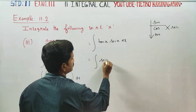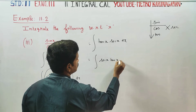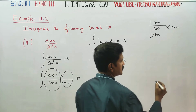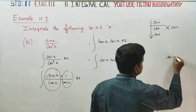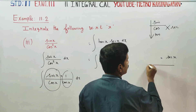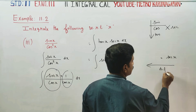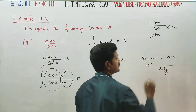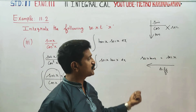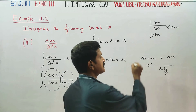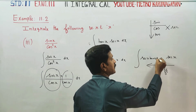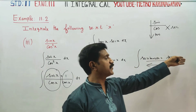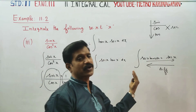The integrand is secant x tan x dx. If you differentiate secant x, you get secant x tan x. So integrating secant x tan x, you will be getting secant x. Integration and differentiation are opposite operations.